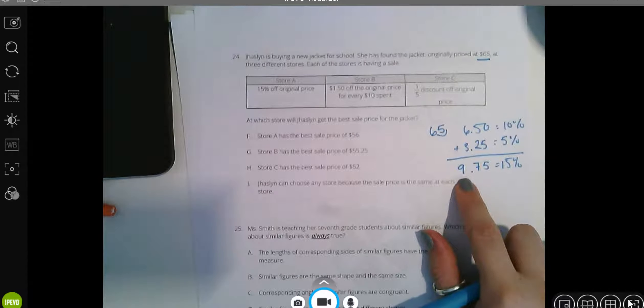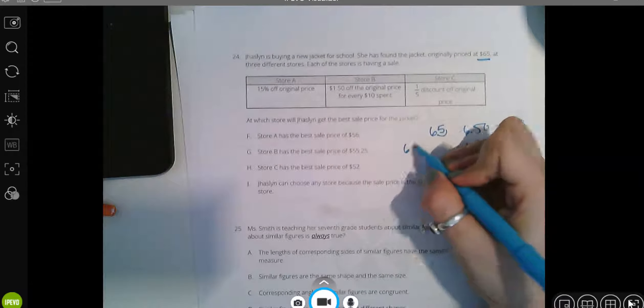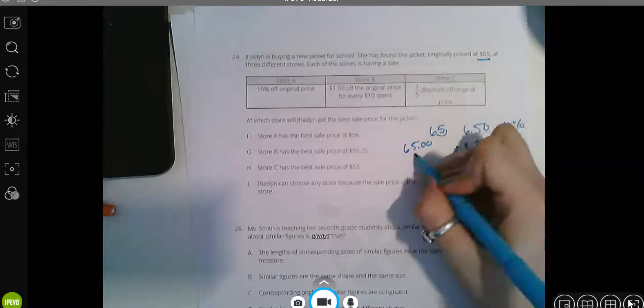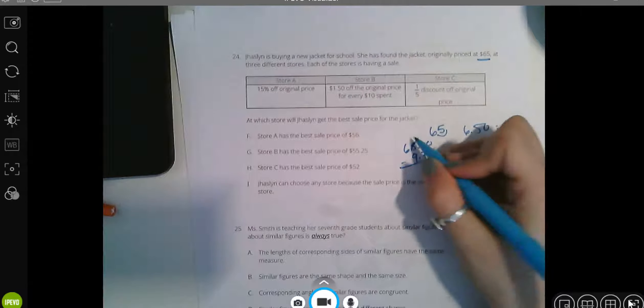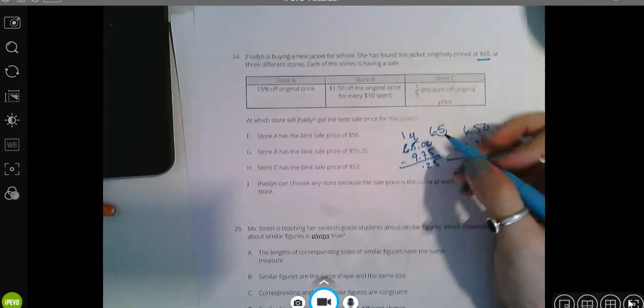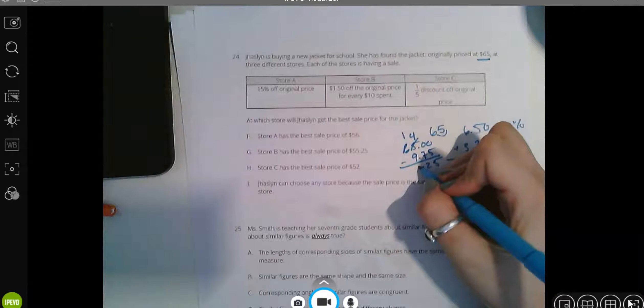That's not the price. That's how much she gets to take off. So $65 originally. And they say, hey, take $9.75 off. 14 minus 9 is $5. So at store A, she pays $55.25 for the coat.